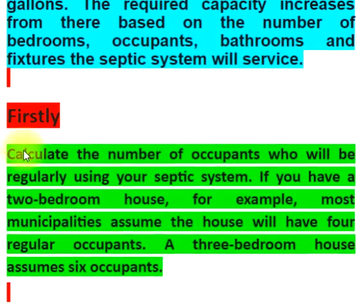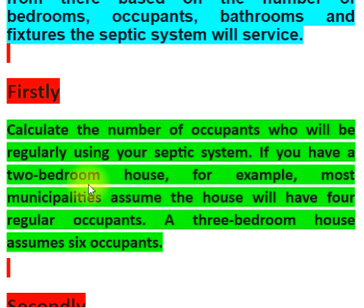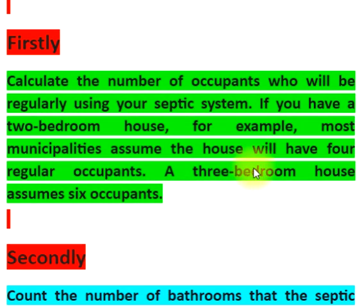Firstly, calculate the number of occupants who will be regularly using your septic system. If you have a two-bedroom house, for example, most municipalities assume the house will have four regular occupants. A three-bedroom house assumes six occupants.